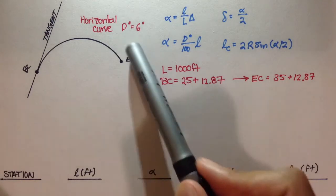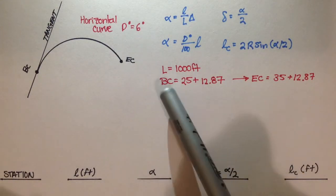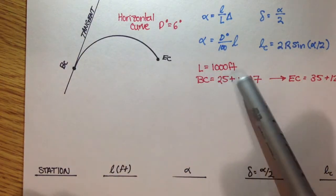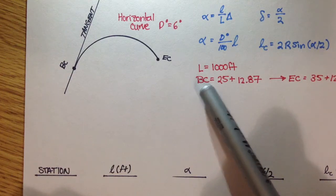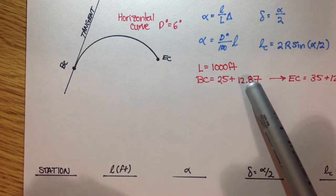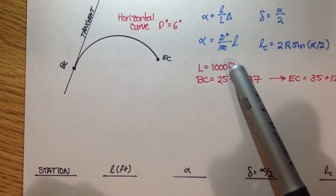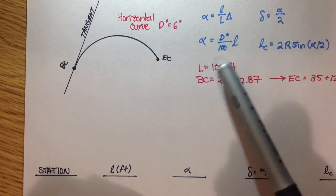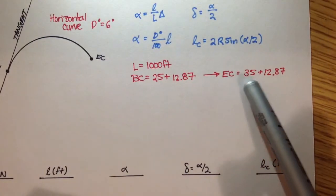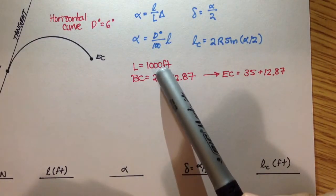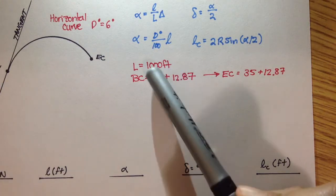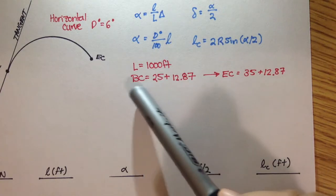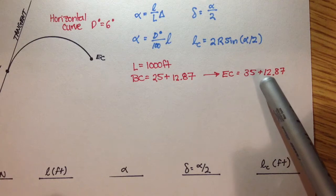This horizontal curve has a degree of curvature of 6 degrees. The length of the curve from BC to EC is 1,000 feet. The station of BC is given as 25 plus 12.87. Since we know the curve length is 1,000 feet and each station is 100 feet, that's 10 stations, so EC is at 35 plus 12.87.